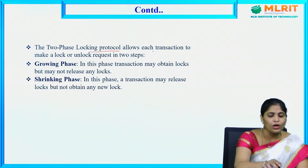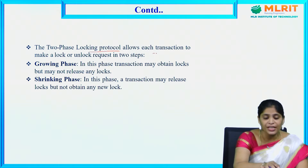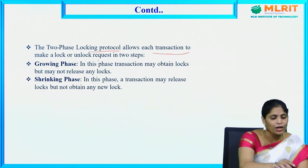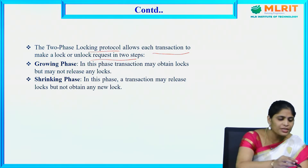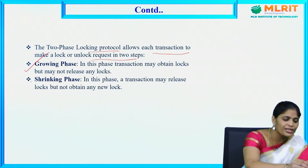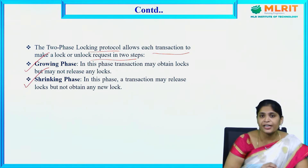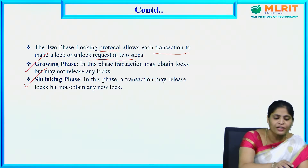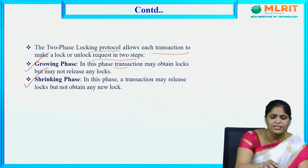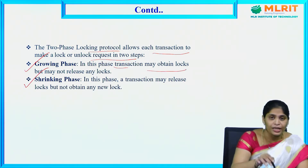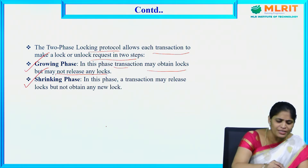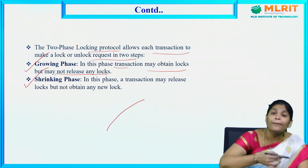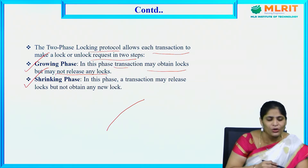The two-phase locking protocol allows each transaction to make lock or unlock requests in two steps: the growing phase and the shrinking phase. In the growing phase, the transaction may obtain locks but may not release any locks. It will acquire — for example — shared locks and exclusive locks during this phase.